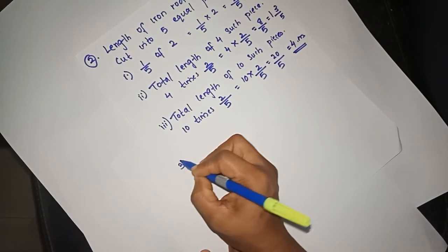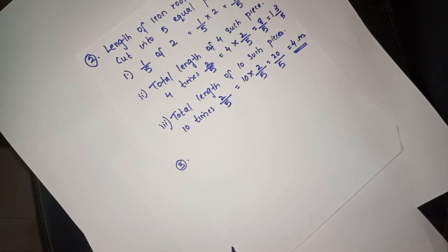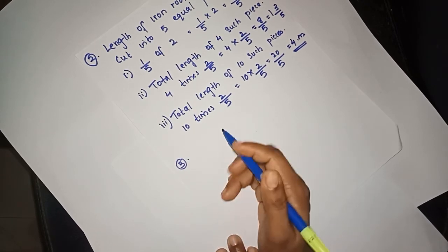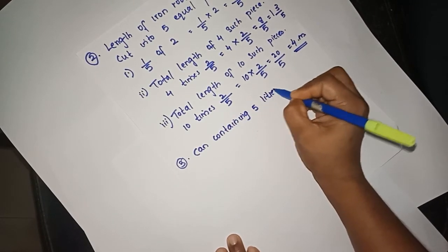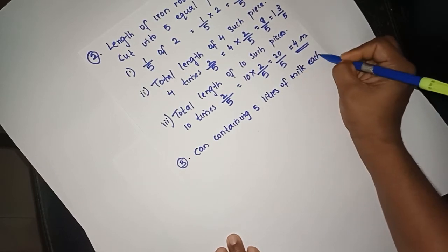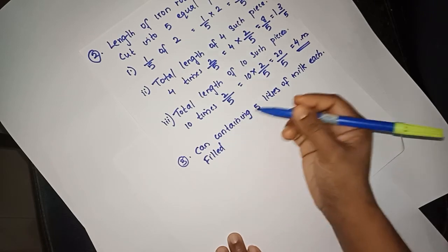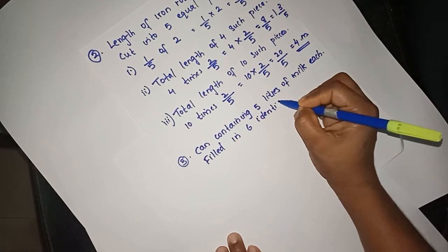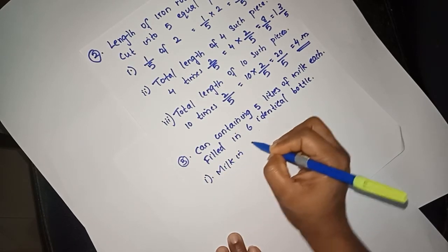Let's take a look at the 3rd question. There are some cans, each containing 5 liters of milk. The milk in each vessel is used to fill 6 identical bottles. How much milk is there in each bottle? A can contains 5 liters of milk. This 5 liters is used to fill 6 bottles. Let's take a look at the milk in each bottle.